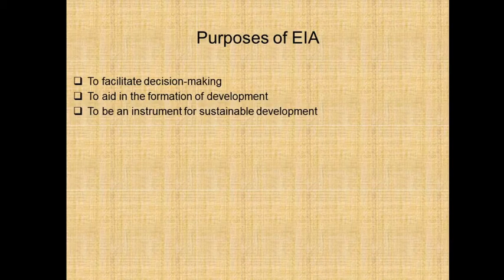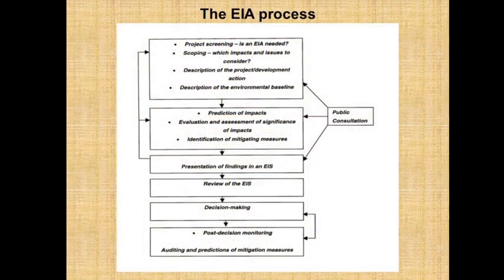The purpose of EIA is to facilitate decision making, to aid in the formation of development, and to be an instrument for sustainable development. This is the flowchart of the EIA process. The first stage is project screening, in which we identify whether EIA is needed or not for that particular project.